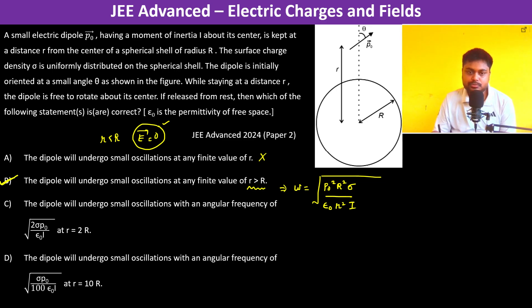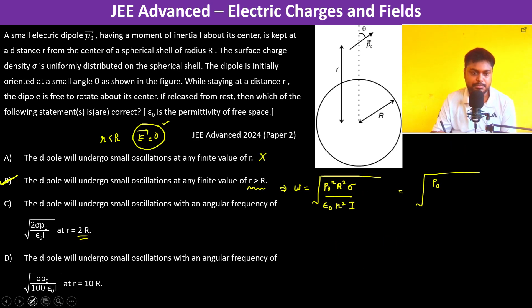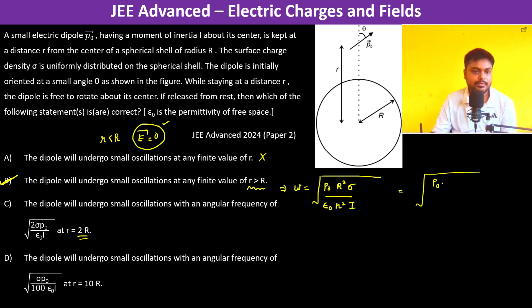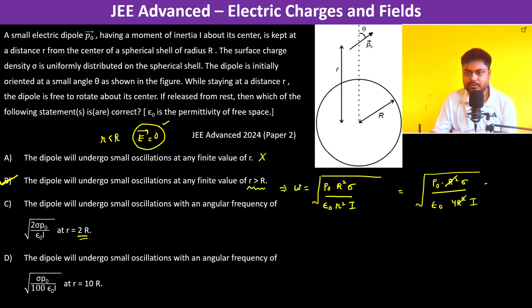Option C states the dipole undergoes small oscillations with a specific angular frequency at r = 2R. Let us substitute r = 2R into ω = √(p₀R²σ / (ε₀r²I)). This gives ω = √(p₀R²σ / (ε₀ · 4R² · I)) = (1/2)√(p₀σ / (ε₀I)), which does not match the given option. So option C is not correct.